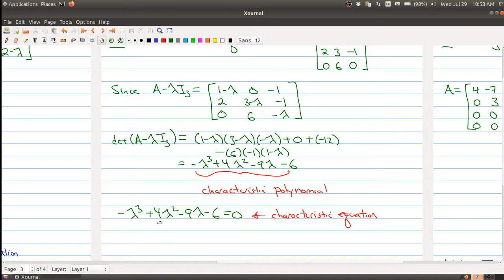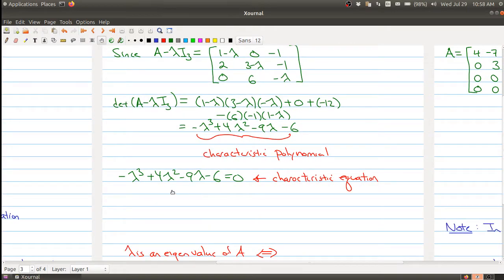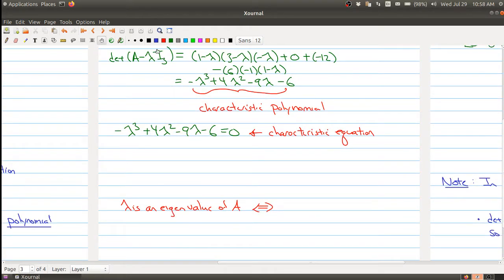Now the whole point is that we want to know when this thing is equal to 0. So for specific lambdas that we put in here, we may or may not get 0. But the whole point is that lambda is an eigenvalue if and only if lambda is a solution to the characteristic equation.